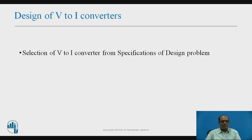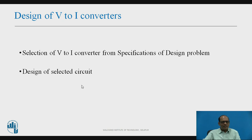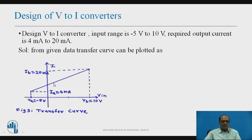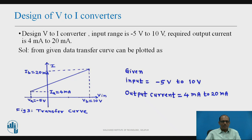Design of a V to I converter consists of two steps: first, selection of the V to I converter from the specifications of the design problem; second, detailed design of the selected converter — that is, the circuit and the component values. Now the design problem: design a V to I converter for input voltage from −5 V to +10 V, with required output current from 4 mA to 20 mA. From the given data, the transfer curve shows φ_A = −5 V with I_A = 4 mA, and φ_B = 10 V with I_B = 20 mA.